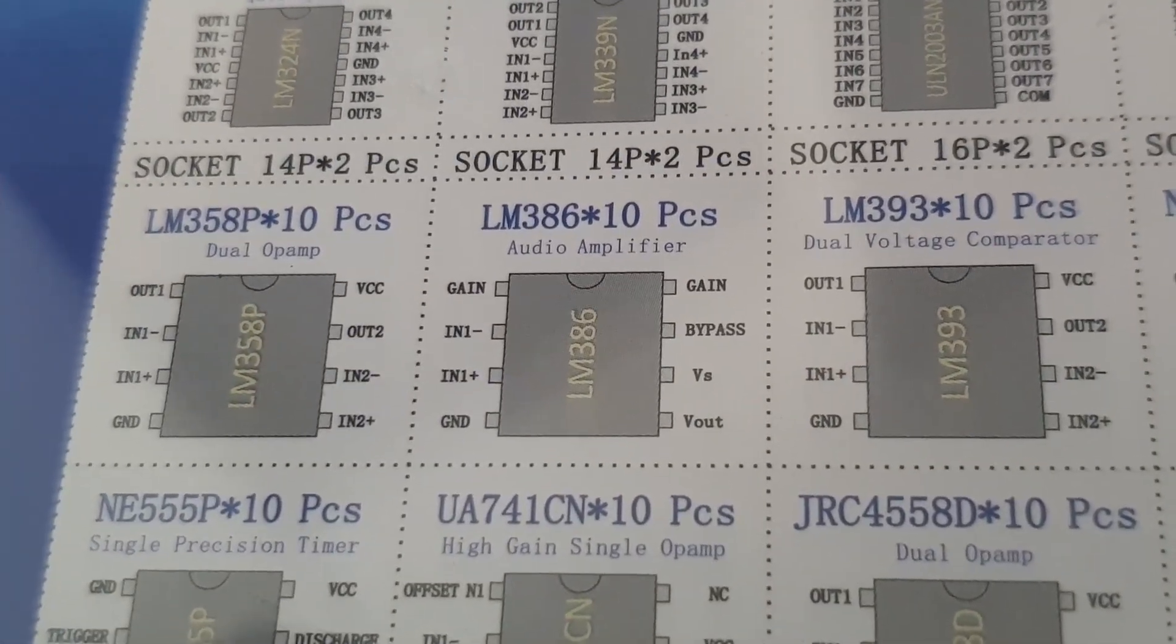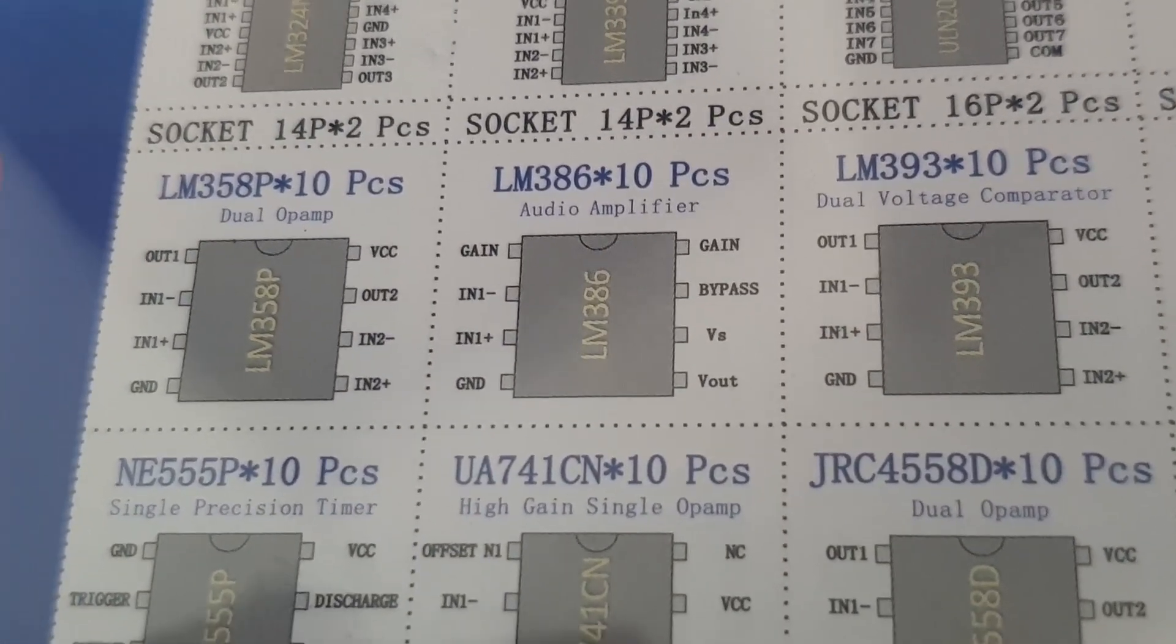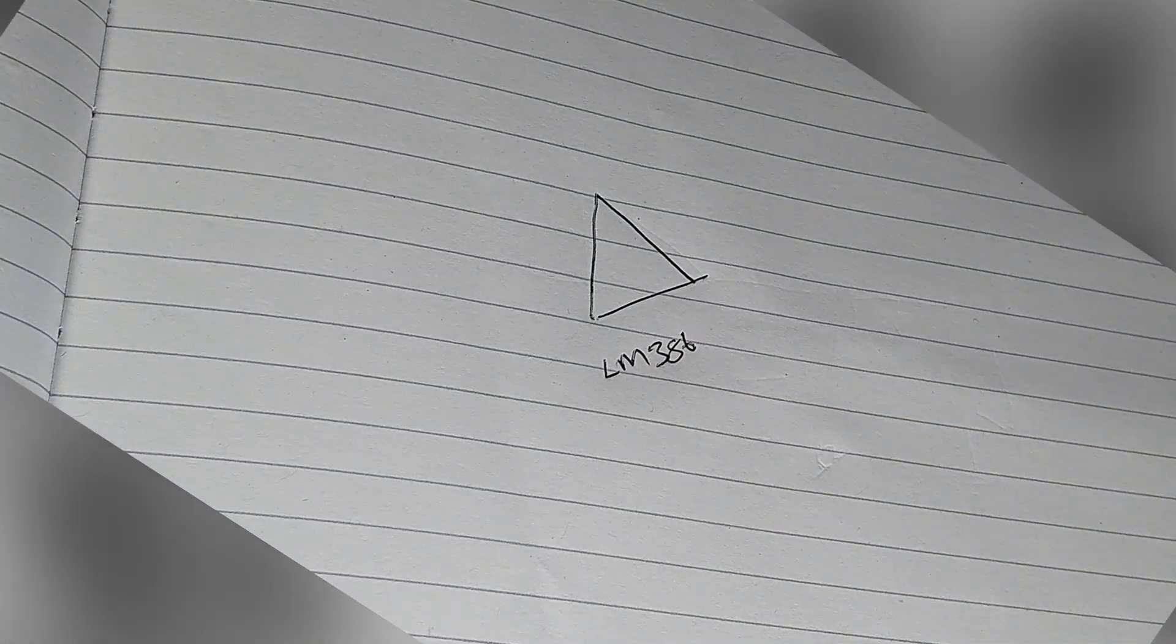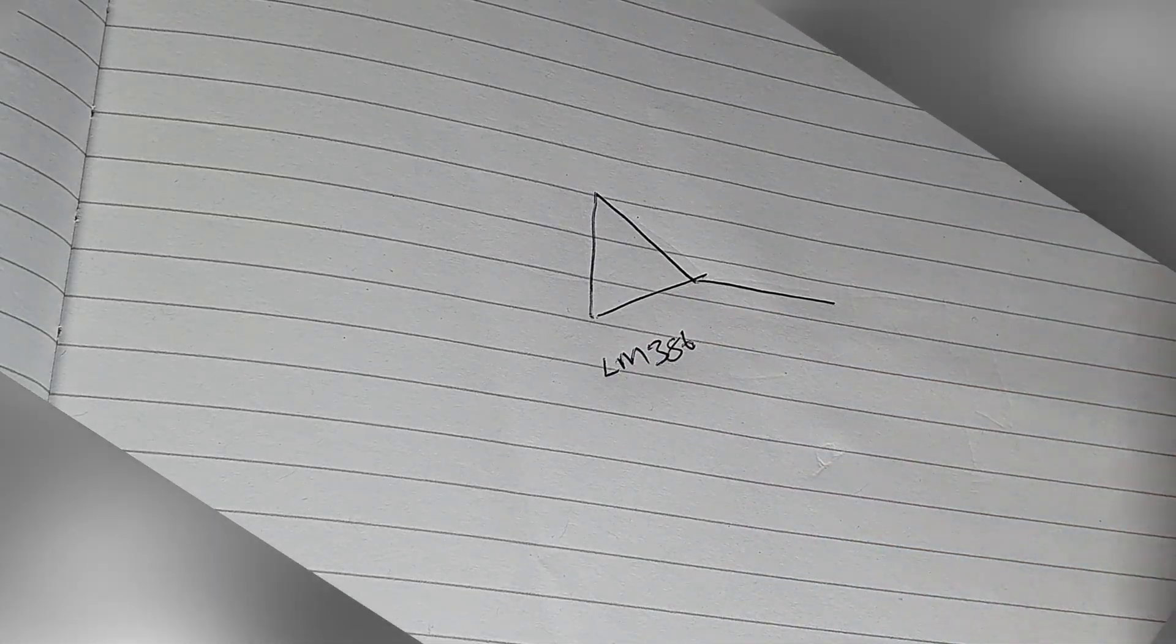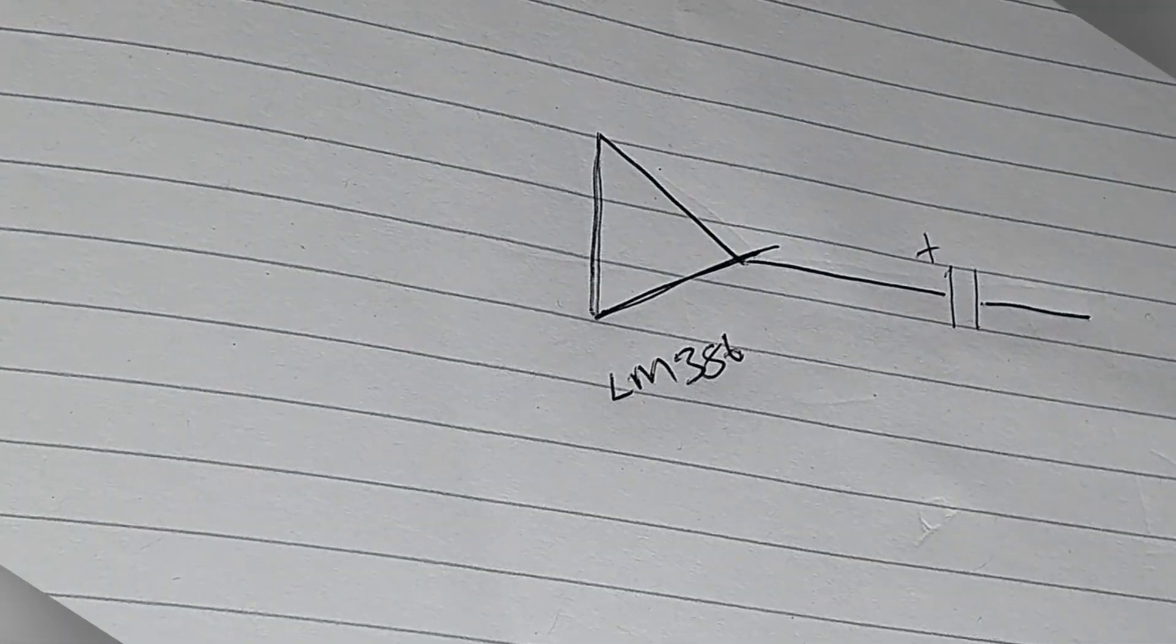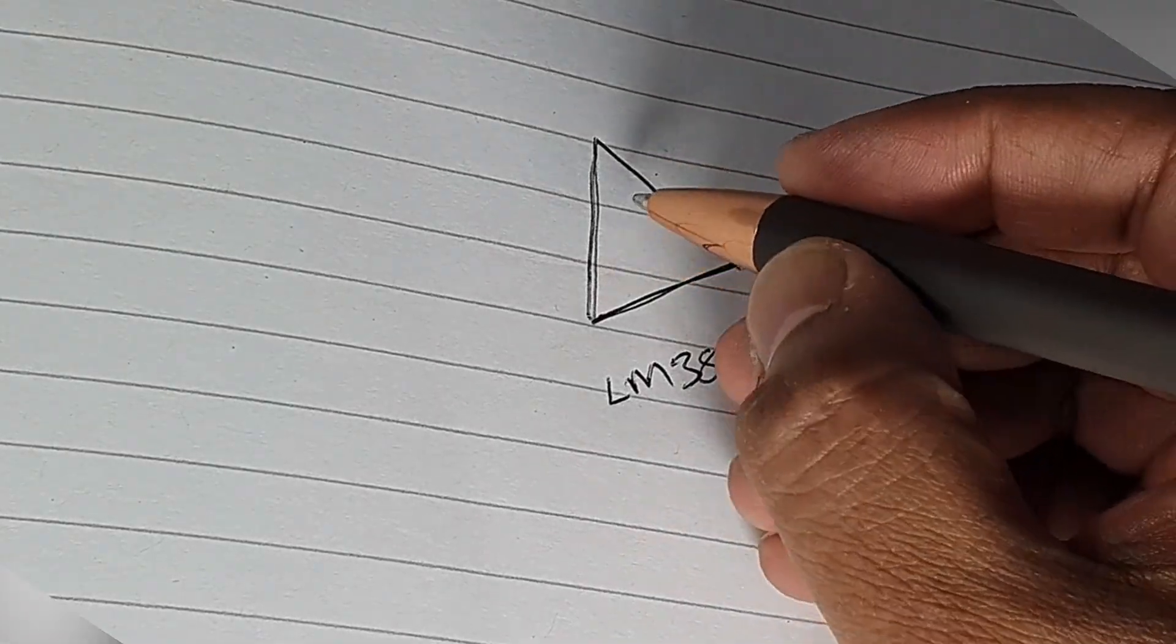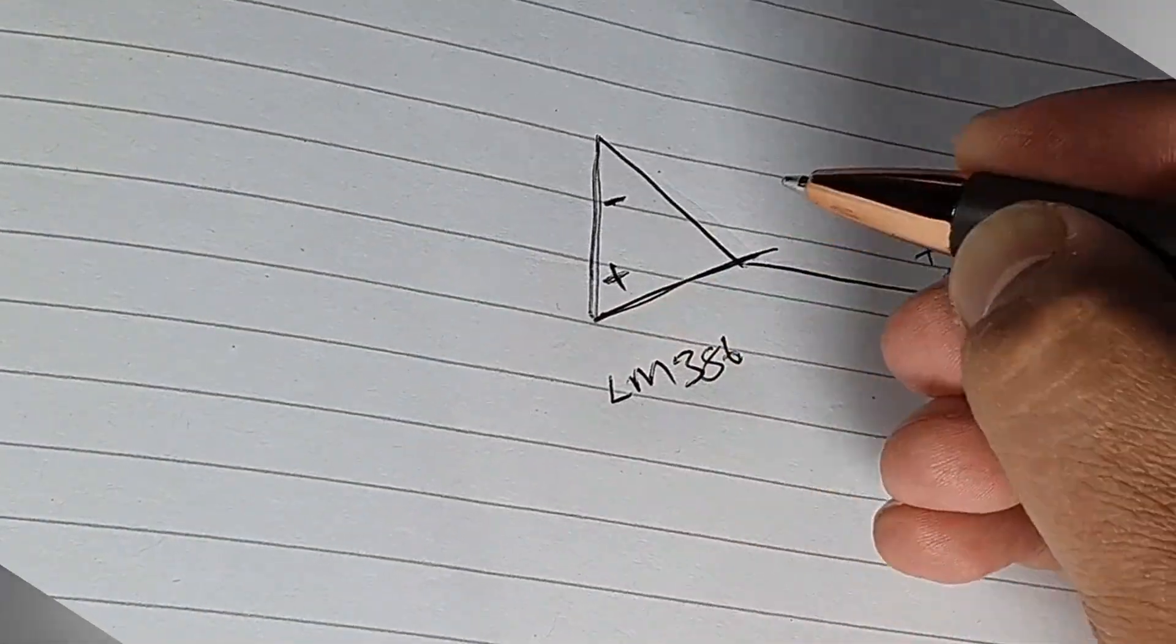The audio amplifier that I found is the LM386 class AB audio amplifier, which I think is a very common part. What I will be doing for this is building the typical application circuit. Obviously I have the non-inverting input and the inverting input on this.